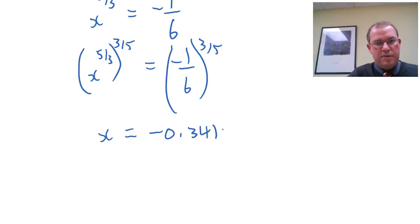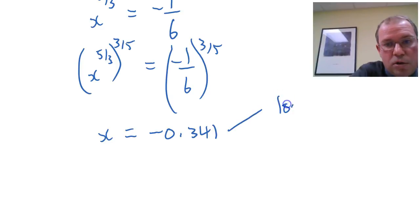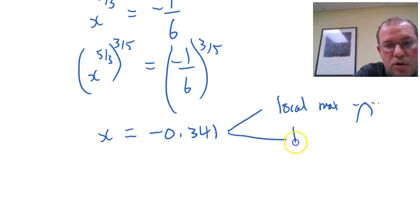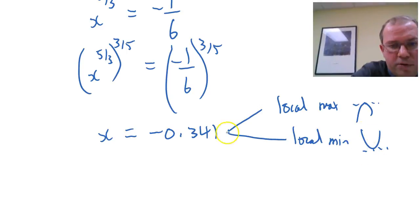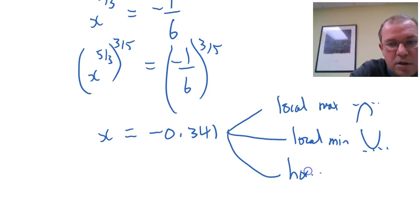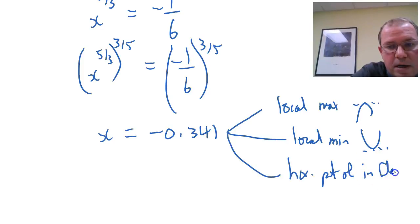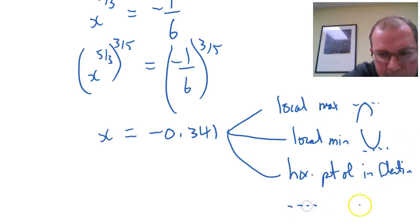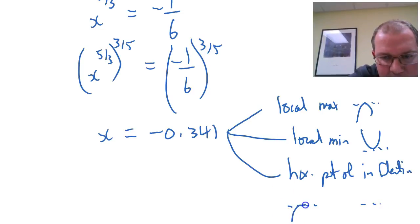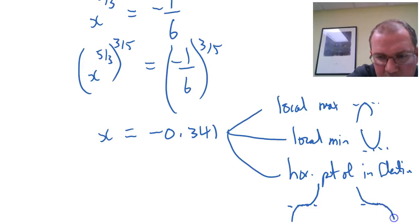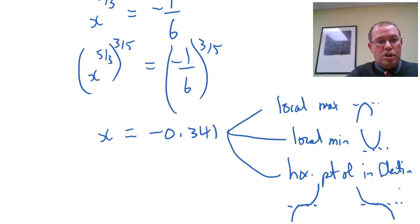This is when the first derivative is zero, so this could be a local maximum, a local minimum, or a horizontal point of inflection — concave down changing to concave up, or concave up changing to concave down. To classify it, let's look at the second derivative and use the second derivative test. So we need to find the second derivative.